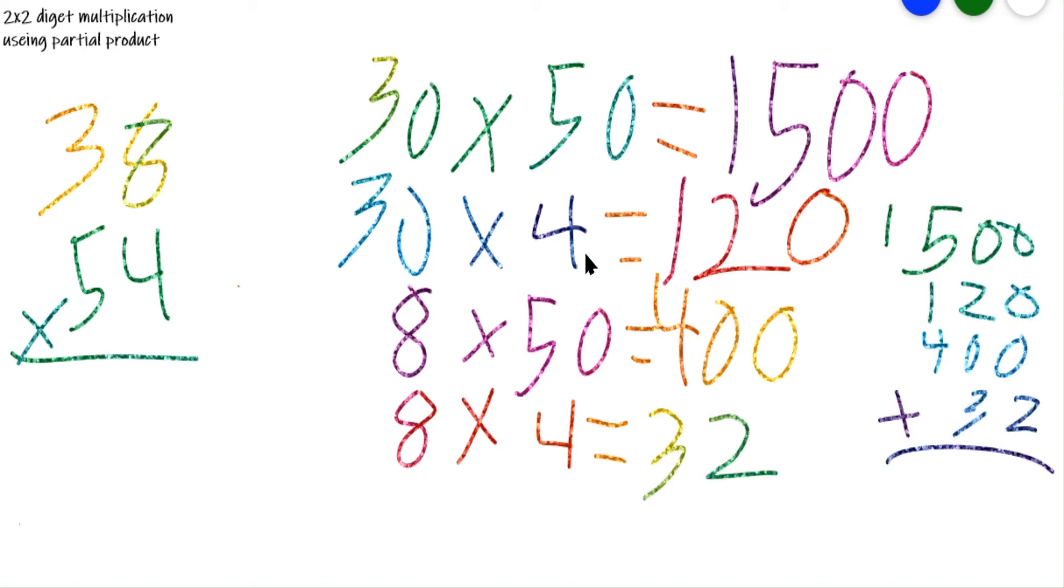Okay, now we have 1500 plus 120 plus 400 plus 32. And when you add that up, that is 2,052.